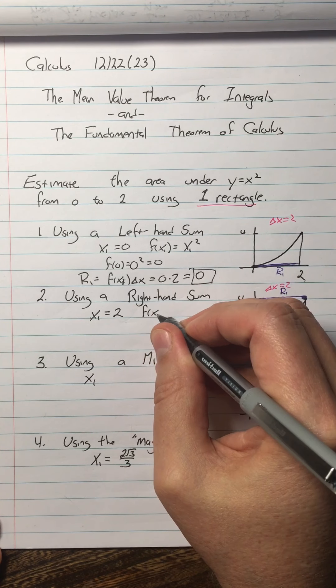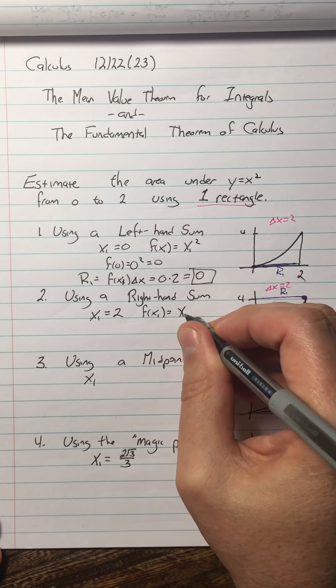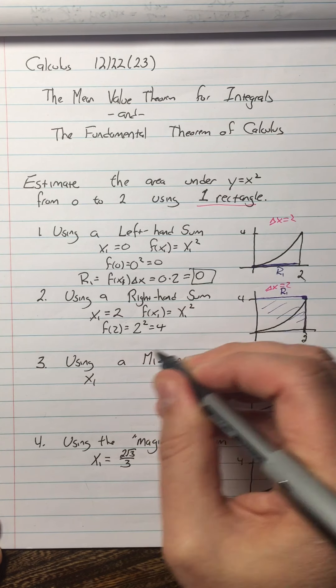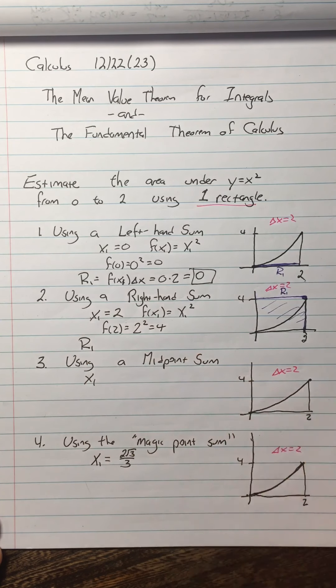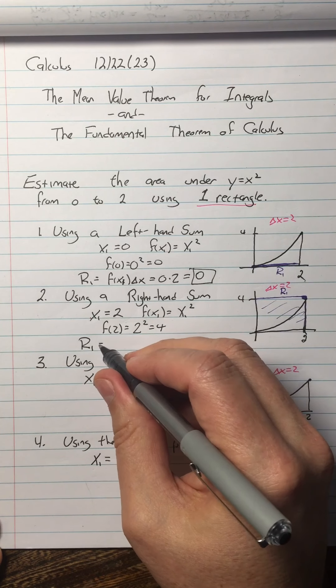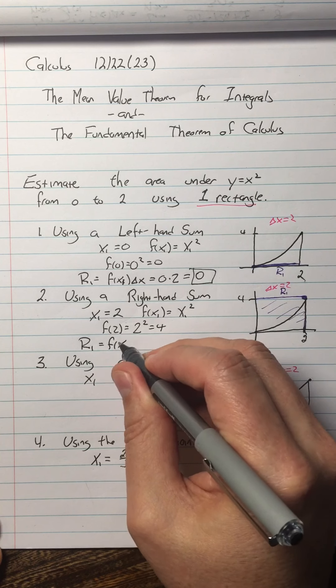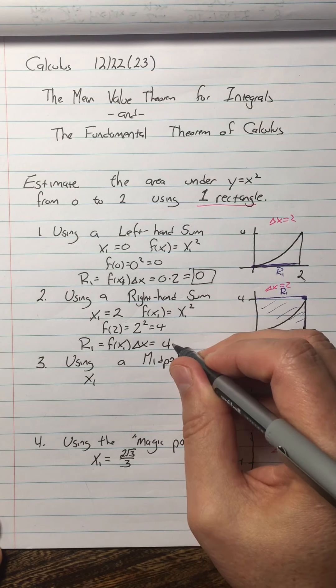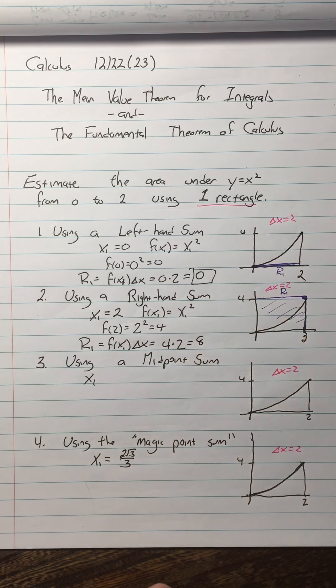So then f of x sub 1, which is x sub 1 squared, is going to be f of 2, which is 2 squared, which is 4. So R1, they're all R1s, equals f of x1 times delta x is 4 times 2, which is 8.